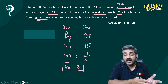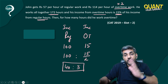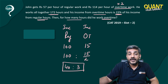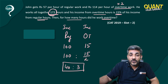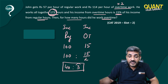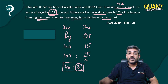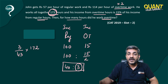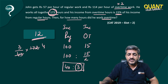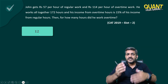So he's working 40 regular hours for every 3 overtime hours. The question asks for how many hours he worked overtime, and he worked a total of 172 hours. Out of every 43 hours, 3 are overtime. Since 172 is exactly 4 times 43, the overtime hours are 4 × 3 = 12. That's our answer.